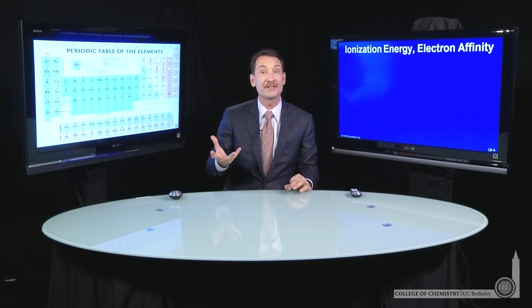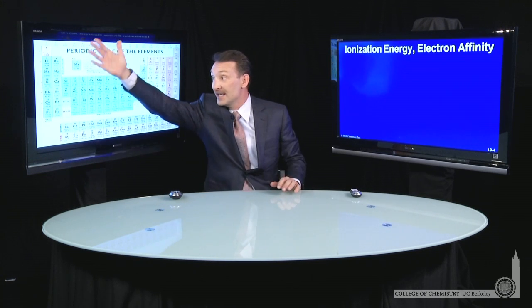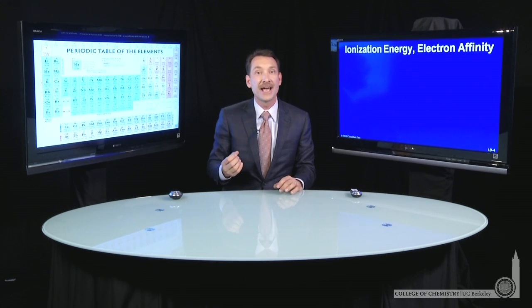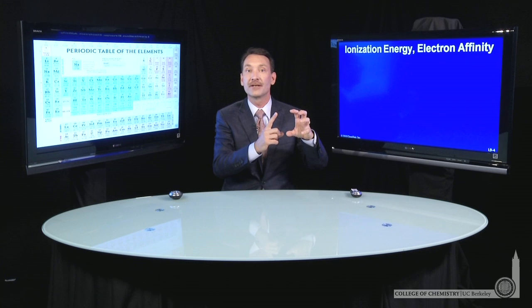We understand now with the advent of quantum mechanics why these elements have similar properties. For instance, in column 1, all the elements have an S1 outer electronic configuration.